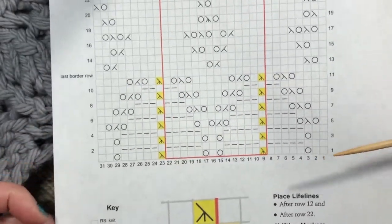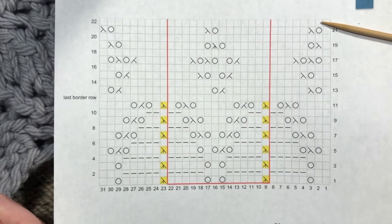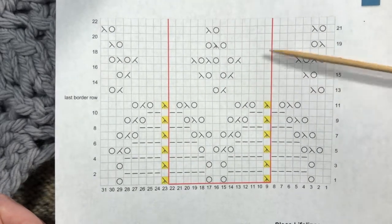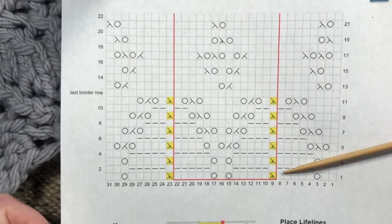For our shawl knit along in the first week, we're going to just knit the border and then a few more rows. We'll set up the little pattern but we're not going to continue past that because this is a lot of knitting. We have a lot of stitches to cast on.